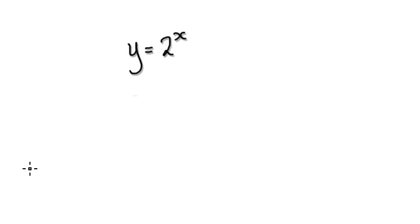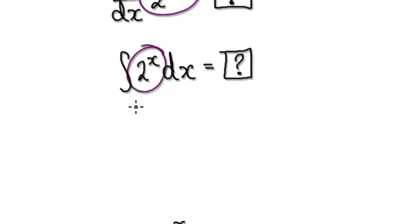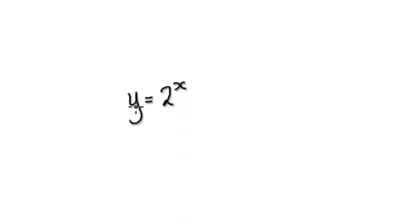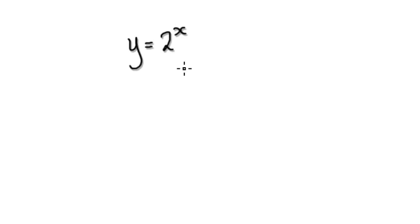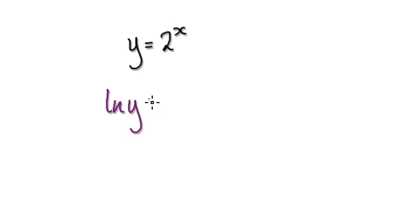So to do this, the first question is how do you differentiate this, and then the next one will be how do you integrate this. Start out with y equals 2 to the power of x. To differentiate it, we take the natural log of both sides. So natural log of y equals x natural log of 2, and then use implicit differentiation.